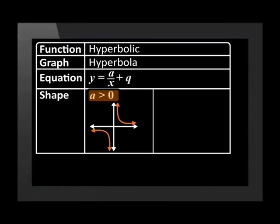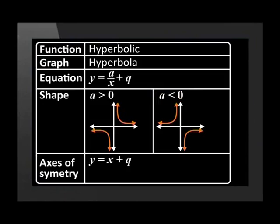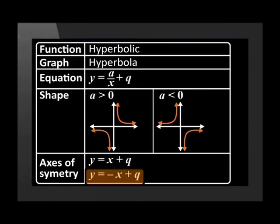If the value of a is positive, then the graph lies in the first and third quadrants. And if the value of a is negative, then the graph lies in the second and fourth quadrants. Hyperbola graphs have two axes of symmetry. The equations are y equals x plus q and y equals negative x plus q.